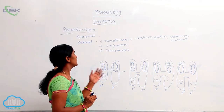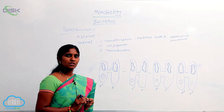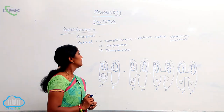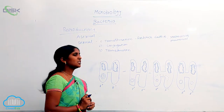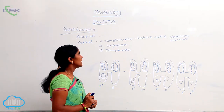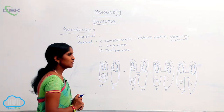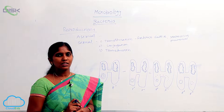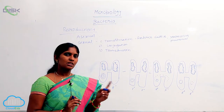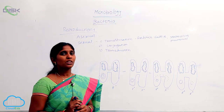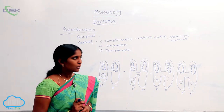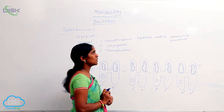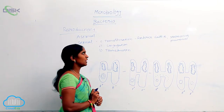Three types of sexual reproduction are reported in bacteria. One is transformation, another one is conjugation, and transduction. Transformation means uptake of naked DNA by a bacterium from its surrounding environment. That is found in Streptococcus pneumoniae by scientist Frederick Griffith.